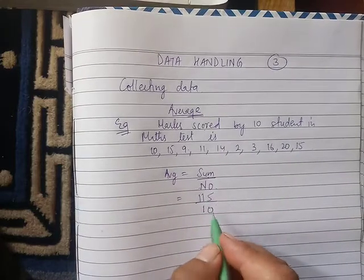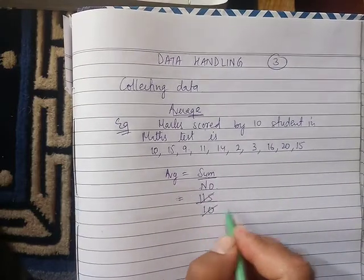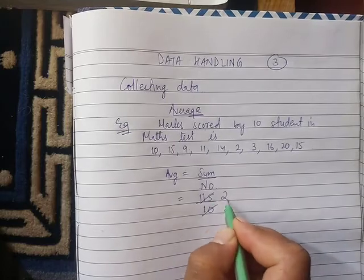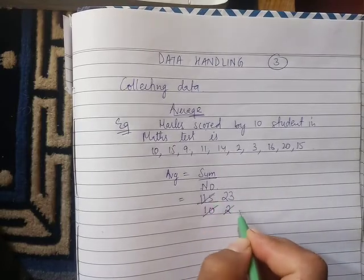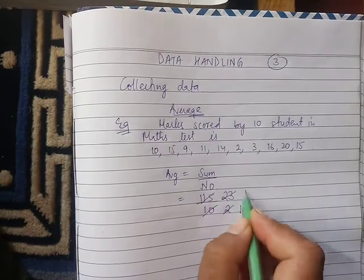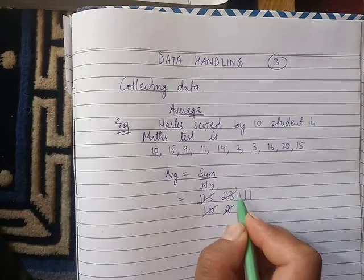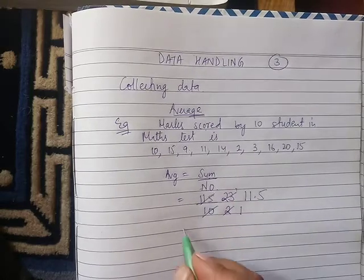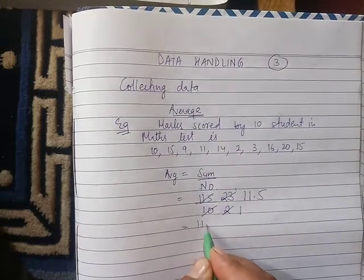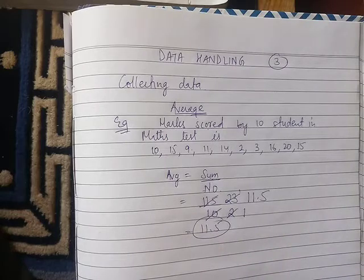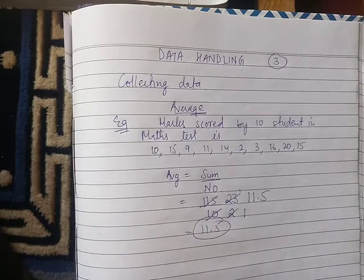Now we will divide. 115 divided by 10. You can see that the average is 11.5. Class average is 11.5.